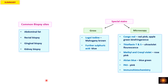Regarding biopsy sites: abdominal fat, rectal biopsy, gingival biopsy, or kidney biopsy. For special stains, grossly Lugol's iodine gives a mahogany brown color, and further application of sulfuric acid gives a blue color if amyloid is present. Microscopically: Congo red gives red-pink or salmon-pink on light microscopy and apple-green birefringence on polarized microscopy; thioflavin T and S gives fluorescence on ultraviolet light; methyl violet and crystal violet give rose-pink; Alcian blue gives blue-green; PAS gives pink; and immunohistochemistry demonstrates the specific type of amyloid.